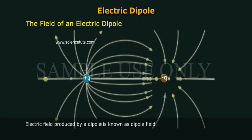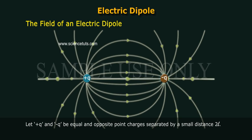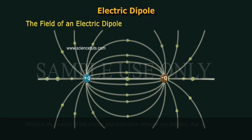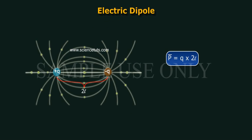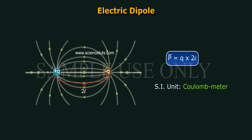The field of an electric dipole. Electric field produced by a dipole is known as dipole field. Let plus Q and minus Q be equal and opposite point charges separated by a small distance 2L. The strength of an electric dipole is measured by a vector quantity known as electric dipole moment P-bar, which is the product of the charge and separation between the charges. P-bar is equal to Q into 2L. The direction of P-bar is always from negative to positive. The SI unit of dipole moment is Coulomb meter.